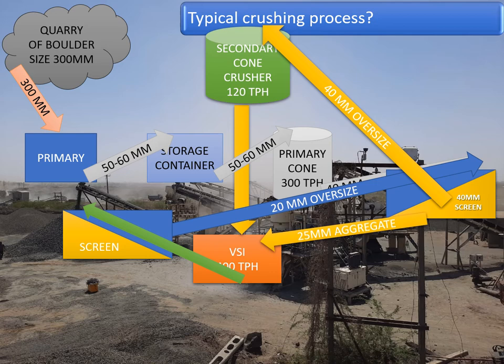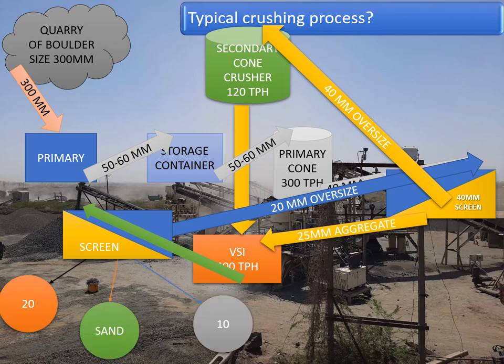Once the screen is set, the final output materials from the crushing unit are 20 mm, sand, and 10 mm aggregates. This is the typical layout generally observed in a tertiary or three-stage crushing plant with vertical shaft impact.